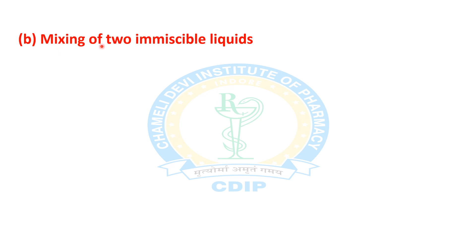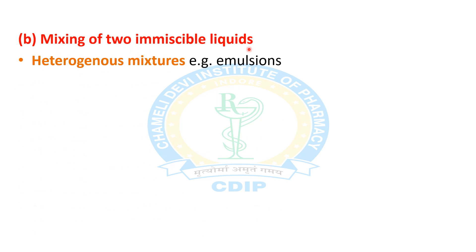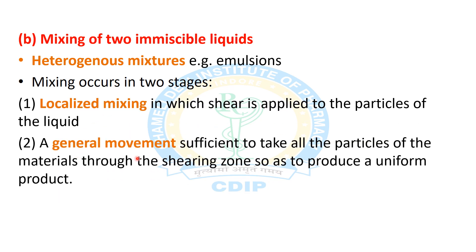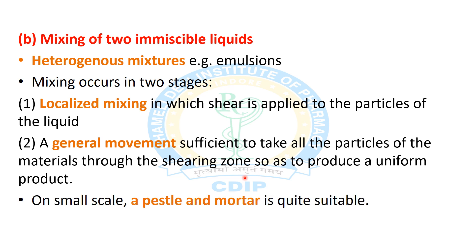The next is the mixing of two immiscible liquids, which gives heterogeneous mixtures. An example is emulsions. This type of mixing occurs in two stages: first is localized mixing, where shear force is applied to the particles of the liquid, and second is general movement, which is sufficient to take all particles through the shearing zone to produce a uniform product. On a small scale, pestle and mortar is used.